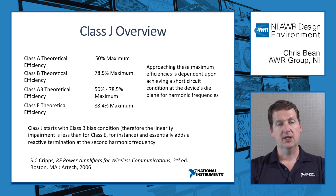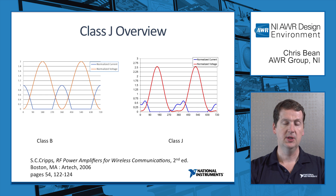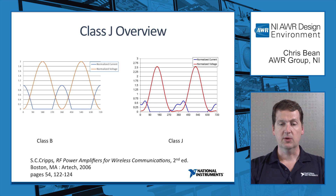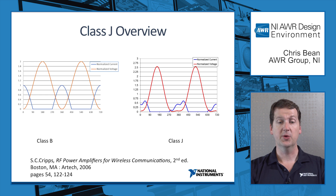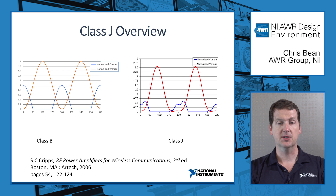So what does that mean in terms of what your waveforms look like? This is Class B — a 180-degree conduction cycle. And if we get Class J waveforms, we add in some harmonic content, we square off the current waveform essentially, and we're minimizing the time when the device has a positive voltage and is also conducting. That drives up the efficiency, and we can reach that Class B theoretical efficiency without having to have short circuit conditions.